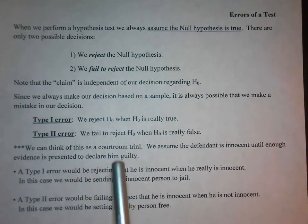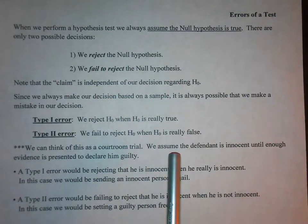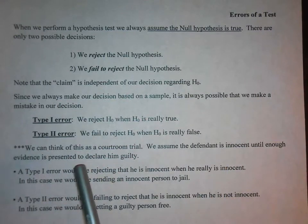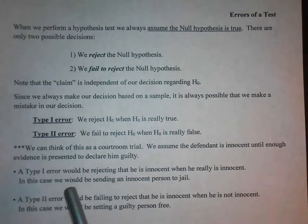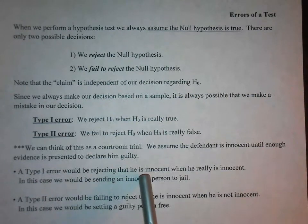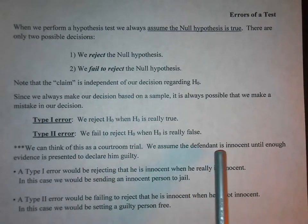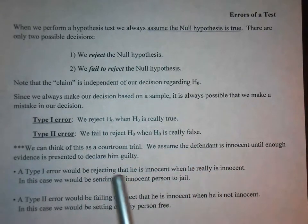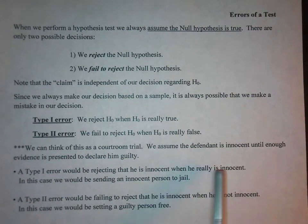A good way to think about that is a courtroom trial. We always assume the defendant is innocent until proven guilty — we assume the defendant is innocent until enough evidence is presented to declare him guilty. A type 1 error would be rejecting that he is innocent, because we're assuming he's innocent — that's the null hypothesis. A type 1 error is rejecting that he is innocent when he really is innocent, which would mean sending an innocent person to jail.